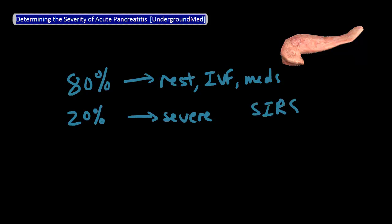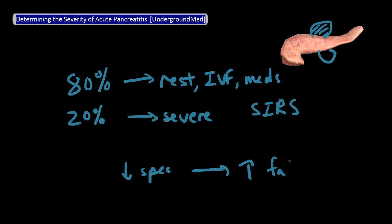Those patients with severe pancreatitis often develop SIRS — the Systemic Inflammatory Response Syndrome — or pseudocysts, or abscesses. The big question for pancreatitis is, can we predict who those patients are and in doing so improve their outcomes? The answer is somewhat. We have a bunch of different models to predict severity of acute pancreatitis, all of them somewhat useful but not consistently accurate. The main complaint against all of these models is that they have a general low specificity, meaning a high false positive rate.